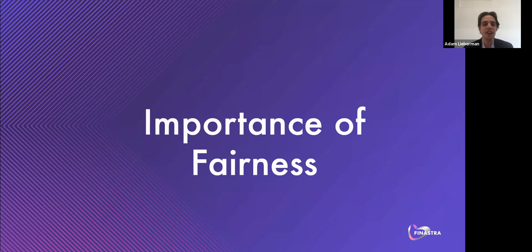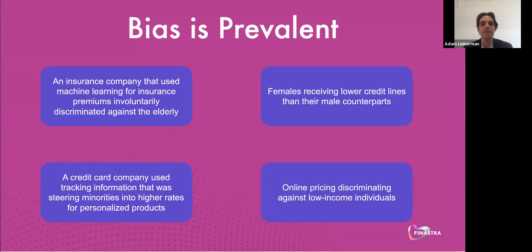Now that we understand fairness and have conceptualized it, let's understand why it's important. Here we see four cases where algorithms have been used to make a decision and have exhibited unfairness to groups and individuals. We have seen issues with insurance companies using machine learning for insurance premiums that discriminated against the elderly. We've seen online pricing discrimination and even product personalization steering minorities into higher rates. A quick Google search against algorithms and bias will pull up hundreds of examples where models were not tested for fairness before they were released into the wild. The point is, bias is prevalent and is all around us.